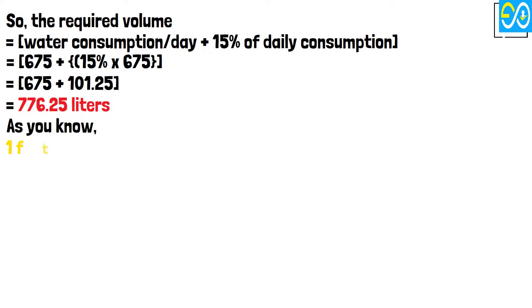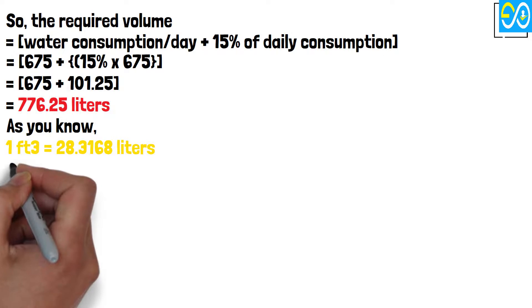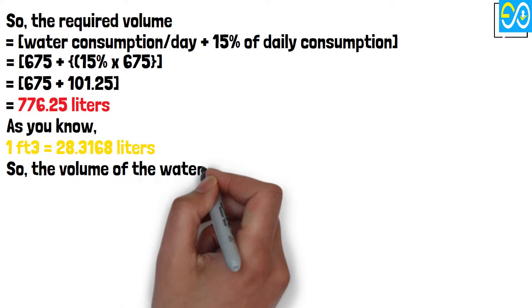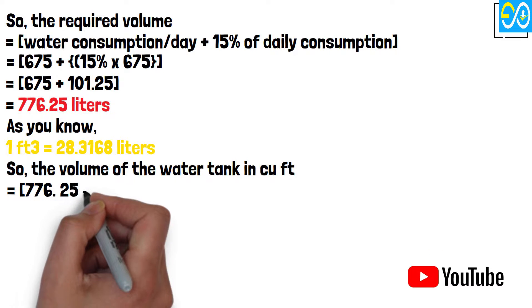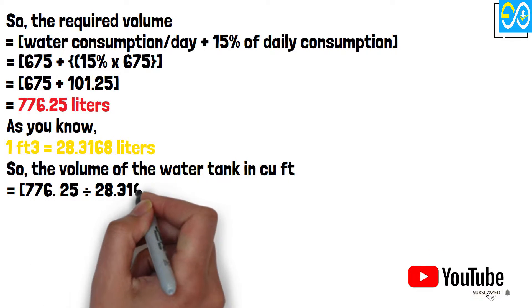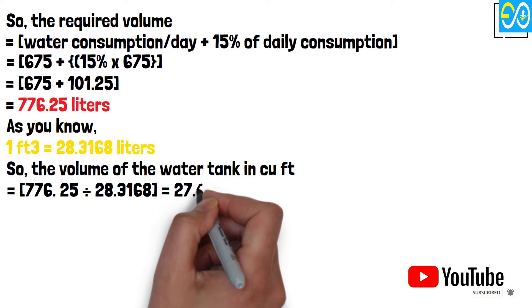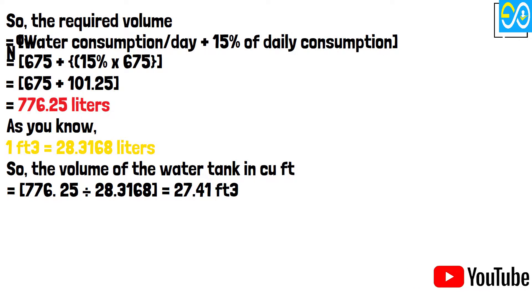As you know, 1 cubic feet equals 28.3168 liters. So, the volume of the water tank in cubic feet equals 776.25 divided by 28.3168, equals 27.41 cubic feet.